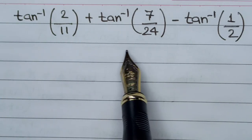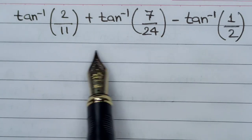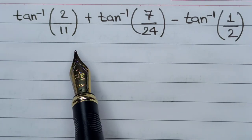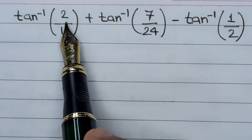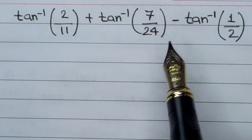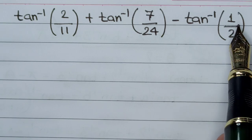Hello everyone, welcome to the YouTube channel. Today we are going to solve a very interesting inverse trigonometric equation: tan⁻¹(2/11) + tan⁻¹(7/24) - tan⁻¹(1/2).